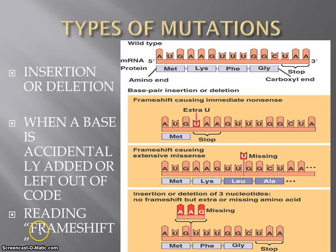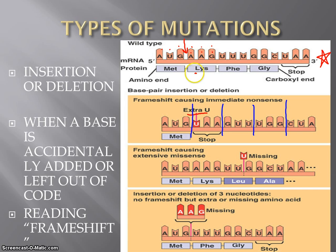Sometimes this is called a frameshift mutation. Using that same example, here is our original protein. In this case, an extra uracil has been inserted. We still have AUG and AAG, but right at that location, the enzyme — DNA polymerase into the original gene or RNA polymerase into the copy — has inserted an extra uracil. And remember, we have to read these three bases at a time — no choice. So now instead of AAG for lysine, we have UAA, which is a stop codon. This insertion doesn't even make any sense; it does not manufacture a protein.